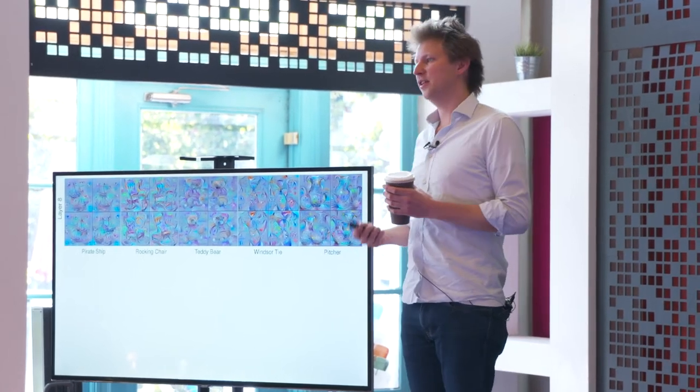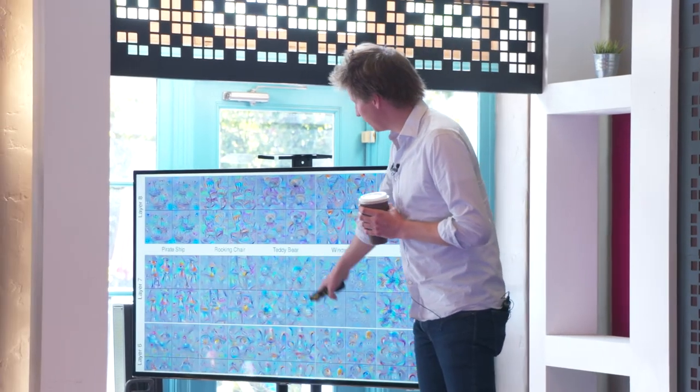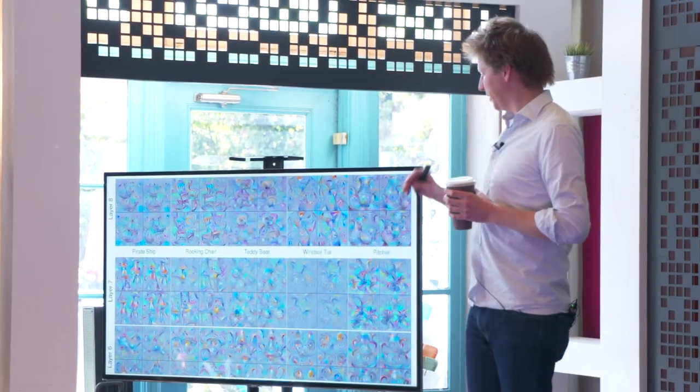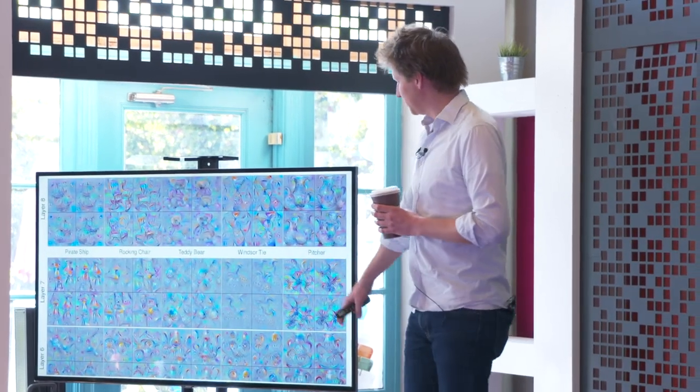We can also ask it to visualize intermediate neurons. So if we visualize the two layers before that, six and seven, we see kind of a crazy amalgamation of different patterns. We actually don't really understand what we see here very well yet.